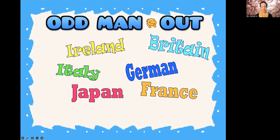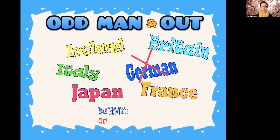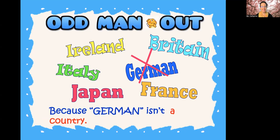Odd man out — which word does not belong in this list? Ireland, Italy, Japan, Britain, German, or France? Which one? German — did I trick you? Why is German the odd man out? Because German isn't a country. If we wanted to change German to a country, just add a Y at the end — Germany. German is a nationality, not a country. Good job!